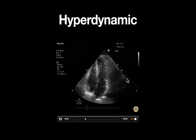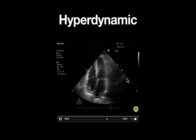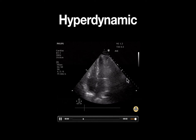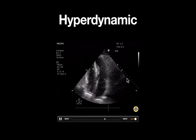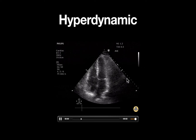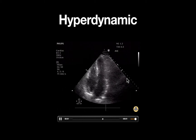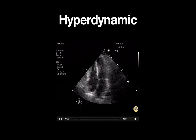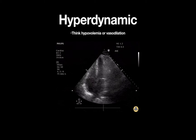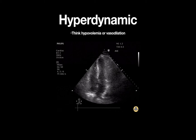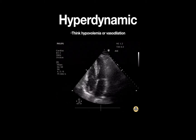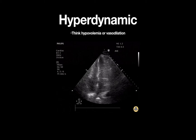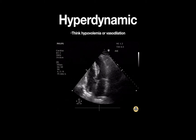Identification of a hyperdynamic left ventricle can be useful during assessment of acute unexplained hypotension or dyspnea, and can represent hypovolemia or peripheral vasodilation — in this case from sepsis.